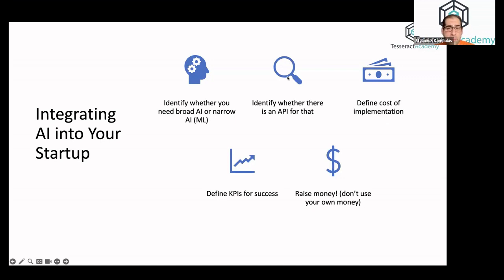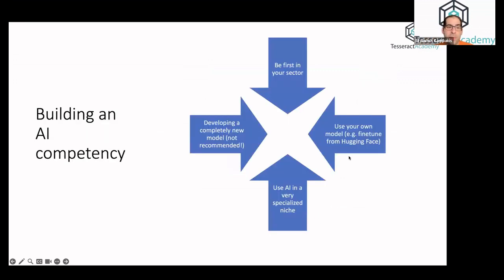Sometimes startups make mistakes around this part. Maybe they're like, oh, we're going to develop our own solution and it's just too expensive. Sometimes they make a mistake around the KPI. They're not clear as to how AI will either help their own internal KPIs or the client's KPIs. Obviously this affects how they position themselves when they try to raise money from an investor.